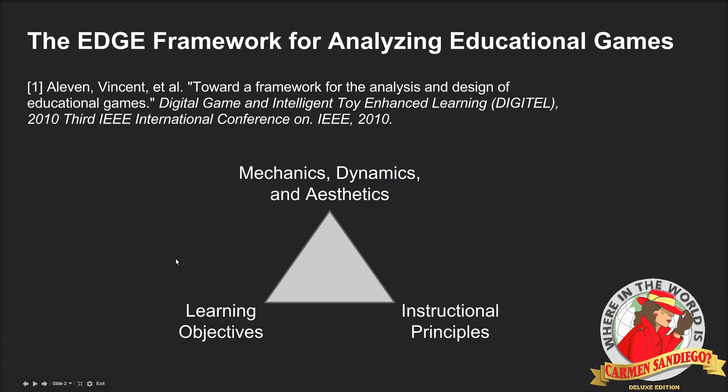There's the learning objectives — that is, what knowledge or skills do you want to impart upon the player? The instructional principles — that is, what best practices or techniques are you going to use to achieve those learning objectives? And the mechanics, dynamics, and aesthetics — that is, how does the game actually function, and how does this provide a certain experience to the user?